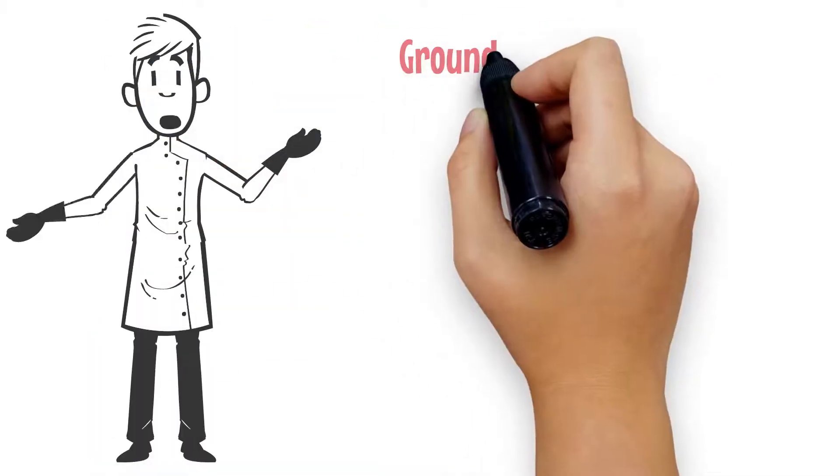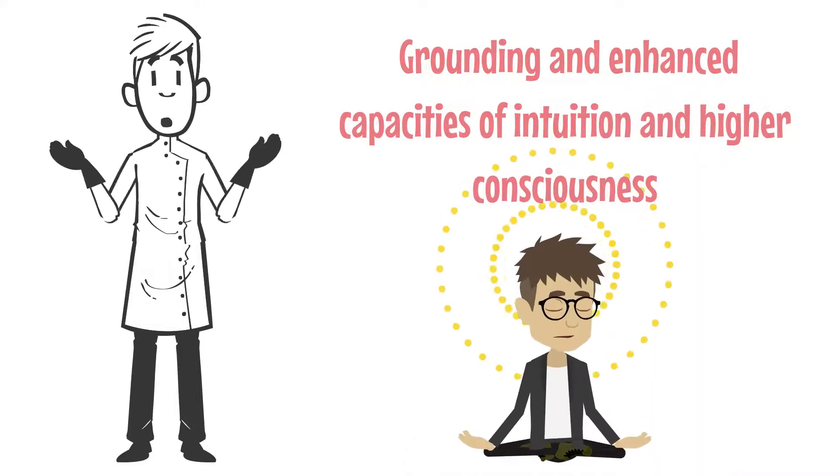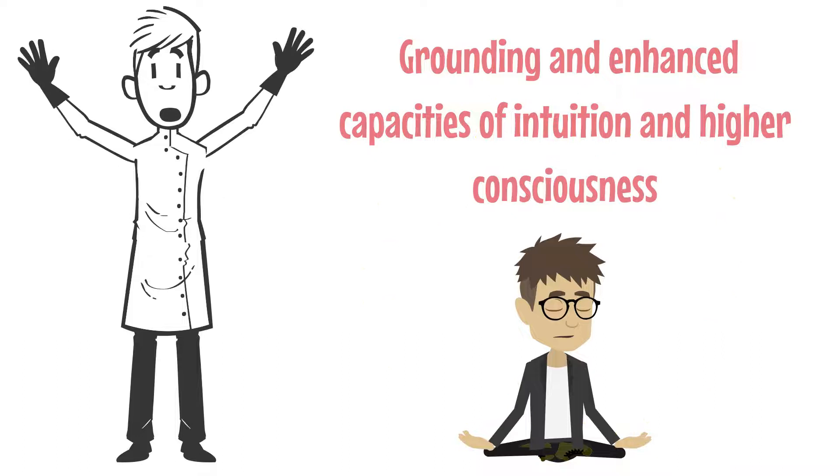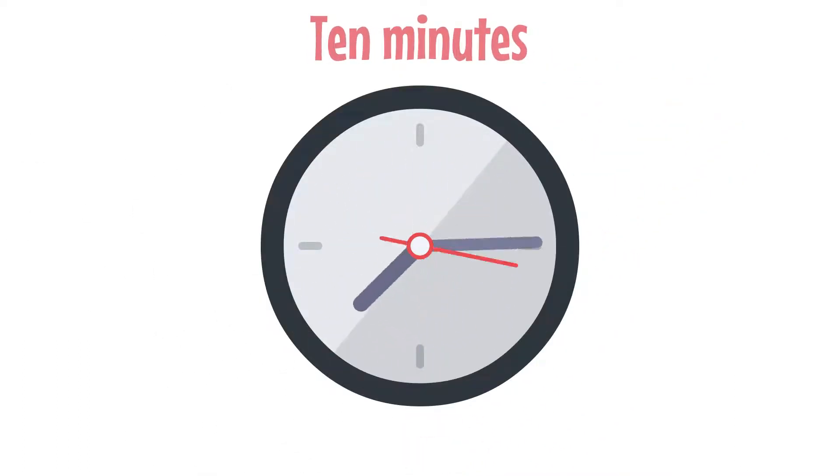To establish the grounding and enhanced capacities of intuition and higher consciousness, you need to follow activation processes and steer clear of destabilizing energies. If you devote just 10 minutes to activating your third eye through the processes we are about to tell you, you may be able to unblock your third eye within months.